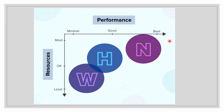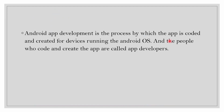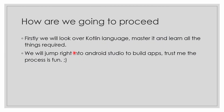All the apps you see around you — Instagram, WhatsApp, Facebook — are all native apps. Android app development is the process by which an app is coded and created for devices running the Android operating system, and the people who code and create the app are called app developers. By the end of this series, we will look over the Kotlin language first, master it, and then jump into Android Studio to build apps.